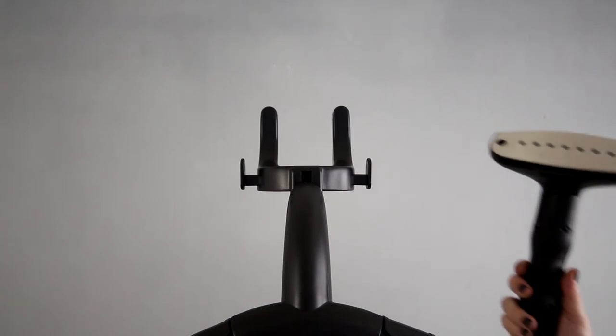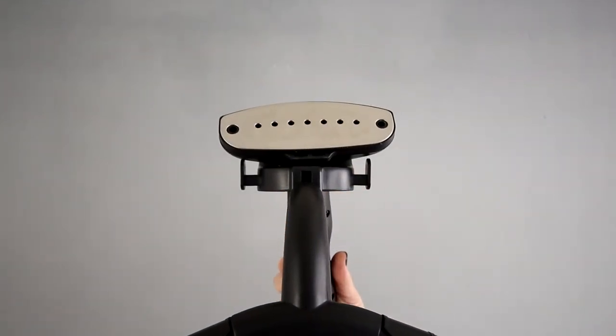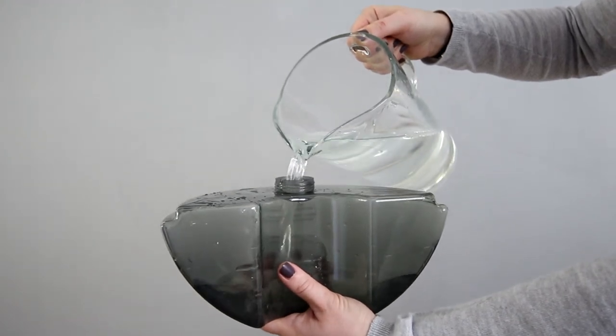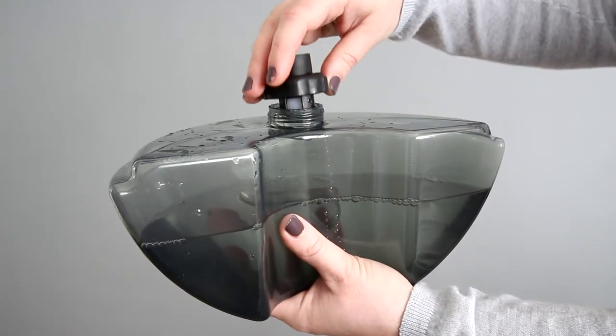Hang the steamer head onto the head hanger. Pour water into the water tank and screw the water tank cap tightly.